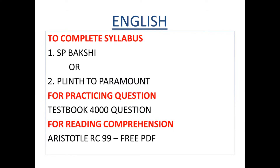For the English section, to complete the syllabus, you have to purchase only one book out of these two: SP Bakshi or Plinth to Paramount. You can buy only one. I personally have SP Bakshi, and Plinth to Paramount is also a very good book. These two books are the best for completing your English syllabus. Since I already bought SP Bakshi, I don't need to buy Plinth to Paramount, but you can buy any one of these two.